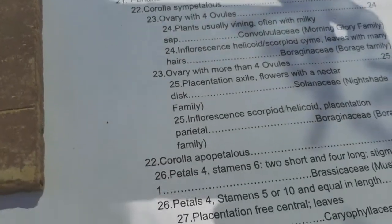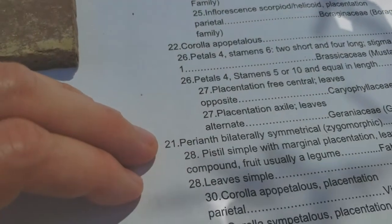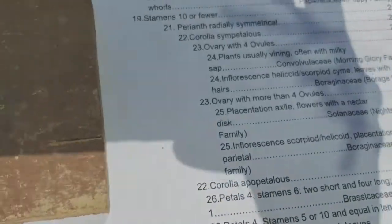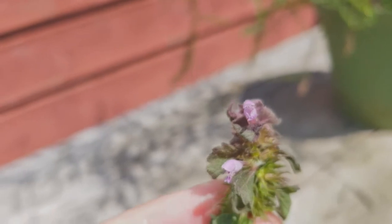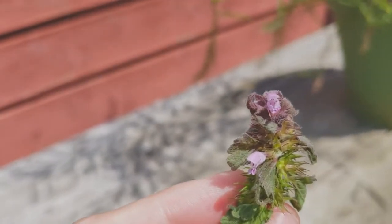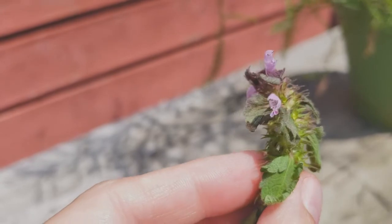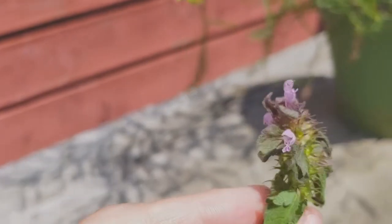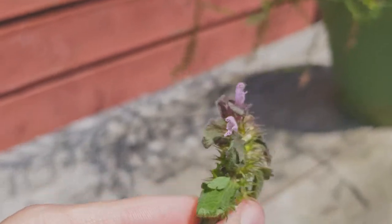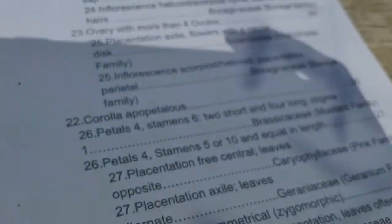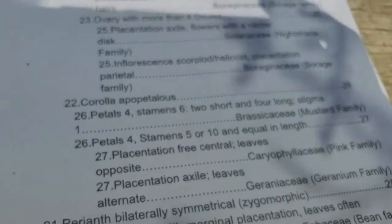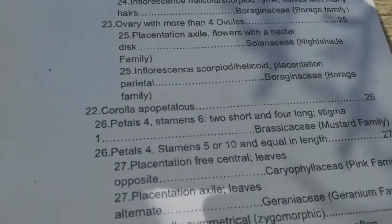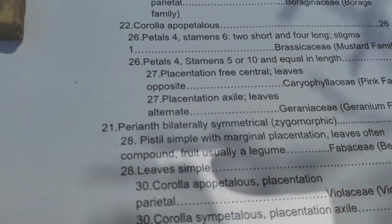Step 21: perianth radially symmetrical, or perianth bilaterally symmetrical (zygomorphic). These flowers have bilateral symmetry — they have two lips. The top goes one way and the bottom the other; top and bottom are different from each other, while left and right are pretty much the same. So that's bilaterally symmetrical, or zygomorphic, also sometimes called irregular. So we chose perianth bilaterally symmetrical, and now we go to 28.